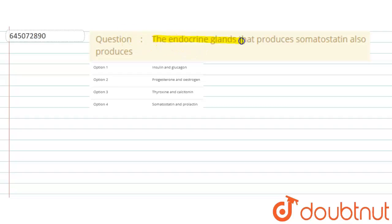The question says: The endocrine gland that produces somatostatin also produces. We are having four options. Option 1 says insulin and glucagon. Option 2 says progesterone and estrogen. Option 3 says thyroxine and calcitonin.